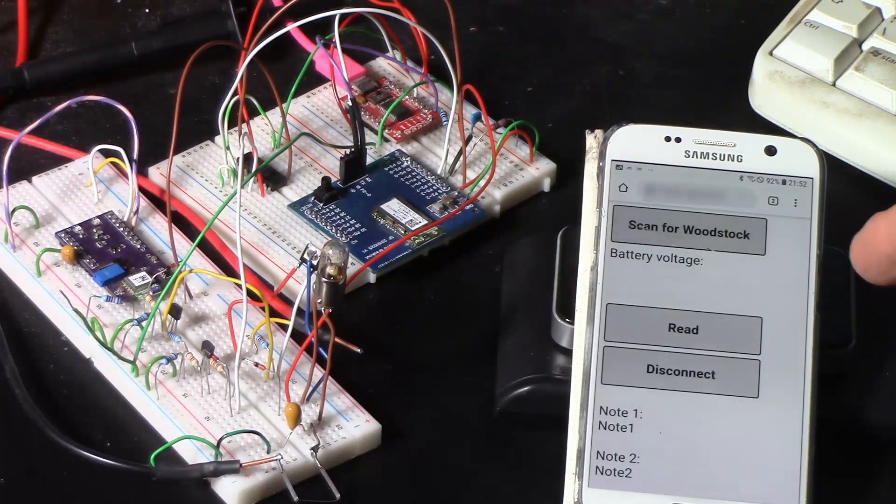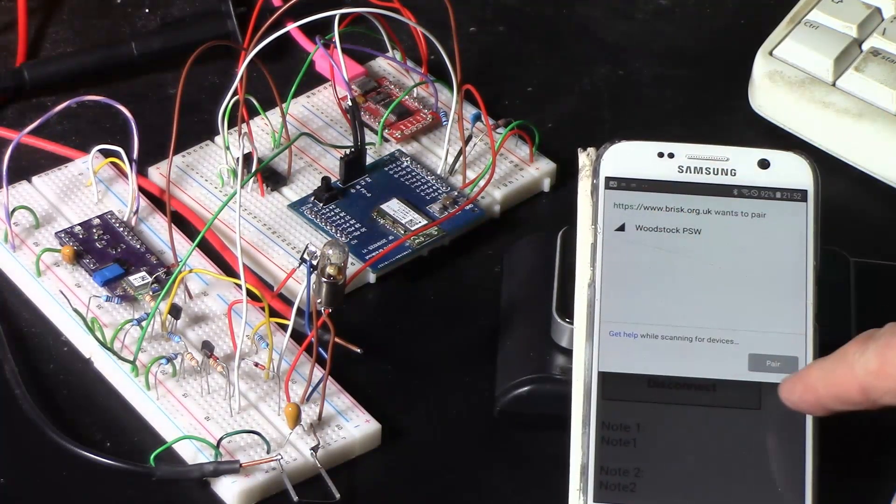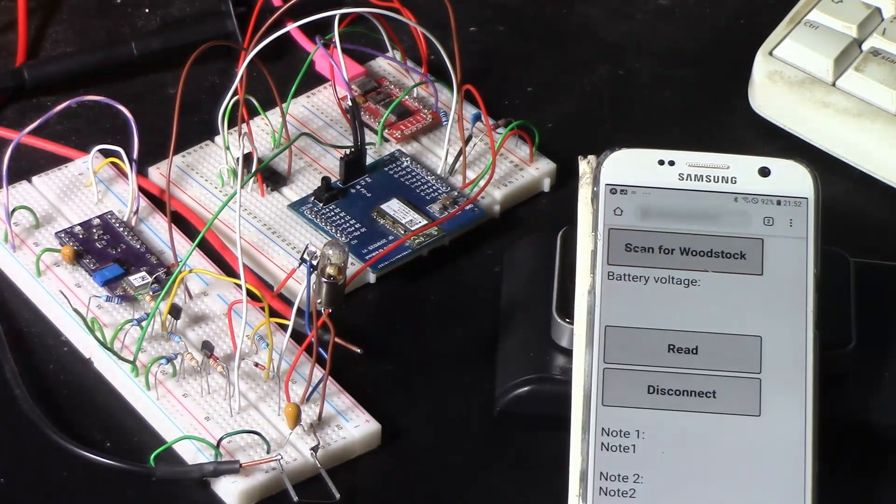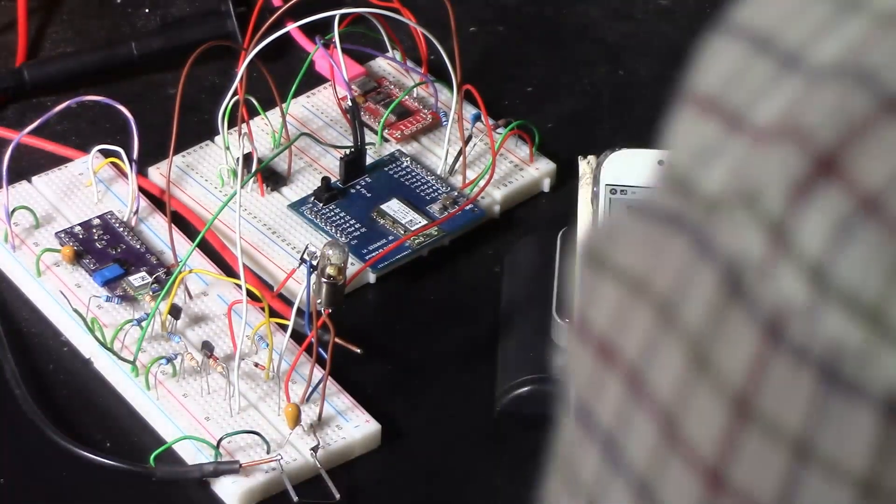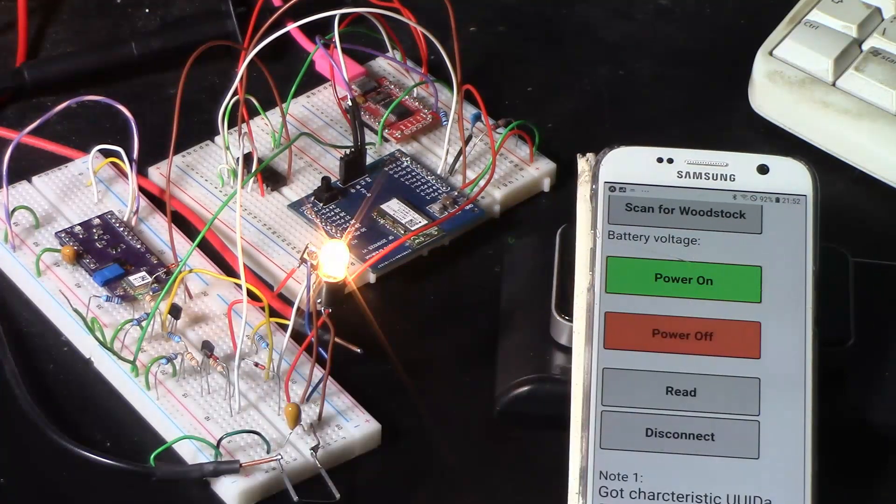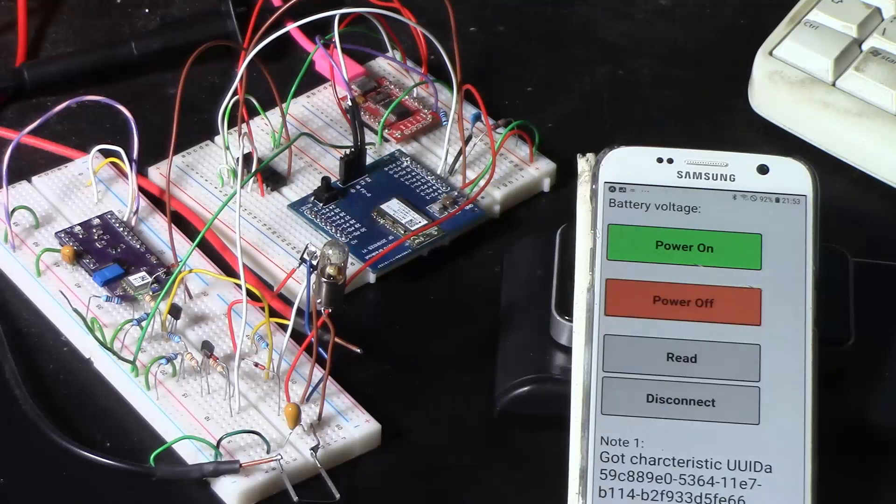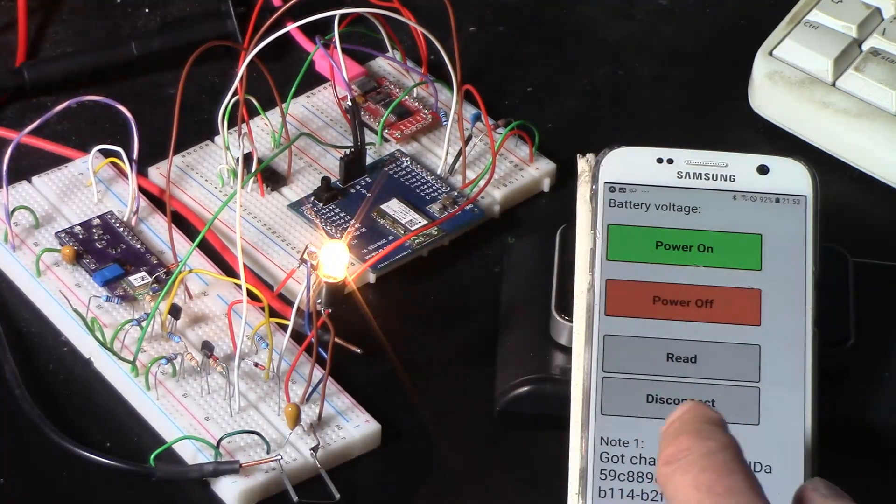So here we have my Android phone running the Chrome browser with a JavaScript application in it, using the Bluetooth JavaScript API. So it says scan for Woodstock, and we press that button. It finds it, and if I select it and pair with it, it will then give us the ability to turn the power on. Alright, this phone doesn't accept my right hand finger though. So it gives us the ability to turn the power on or off. See, it only accepts my left finger, not the right finger. I mean, how incredible is that?